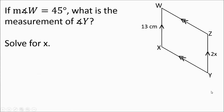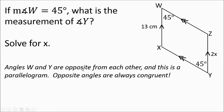Moving on to this figure. If the measurement of angle W is 45 degrees, what is the measurement of angle Y? Looking at the markings, these two sides are parallel and these two sides are parallel — this is a parallelogram. Since opposite angles are congruent in a parallelogram, if angle W is 45, then angle Y is also 45 degrees. No calculations needed here.